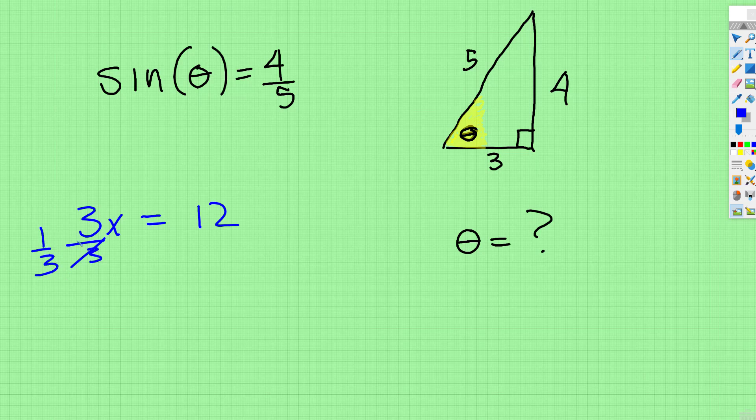Whatever the equality properties, whatever you do to one side, you do to the other. Here, the coefficient cancels, x is equal to 4.